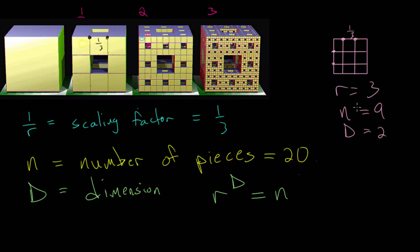the number of new pieces is nine, and we already know that the dimension of a square is two. You can see if we plug these values into the equation, it does make sense, because we have three to the second power, three times three, and that is equal to nine. So this equation does make sense for self-similar objects, and we can use it to find the dimension of this Menger sponge.